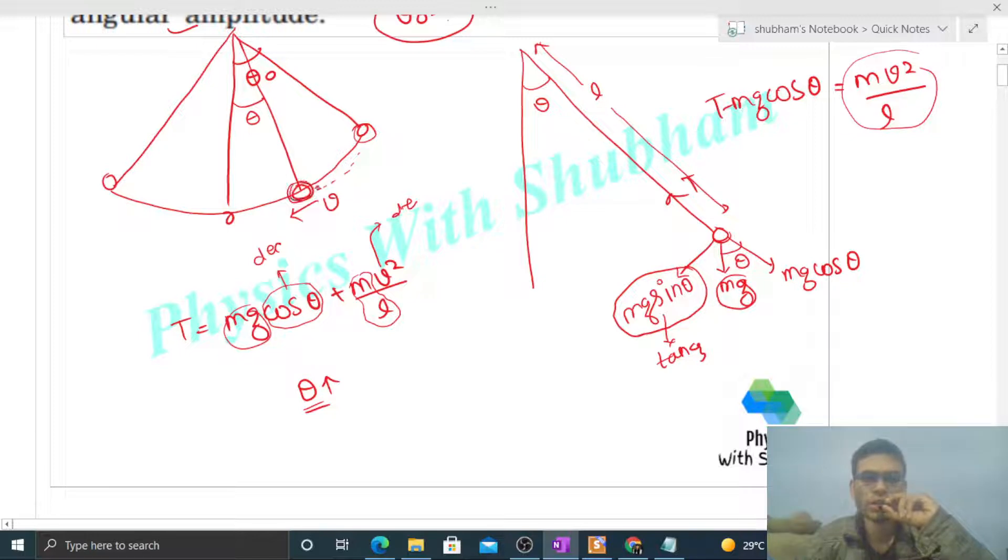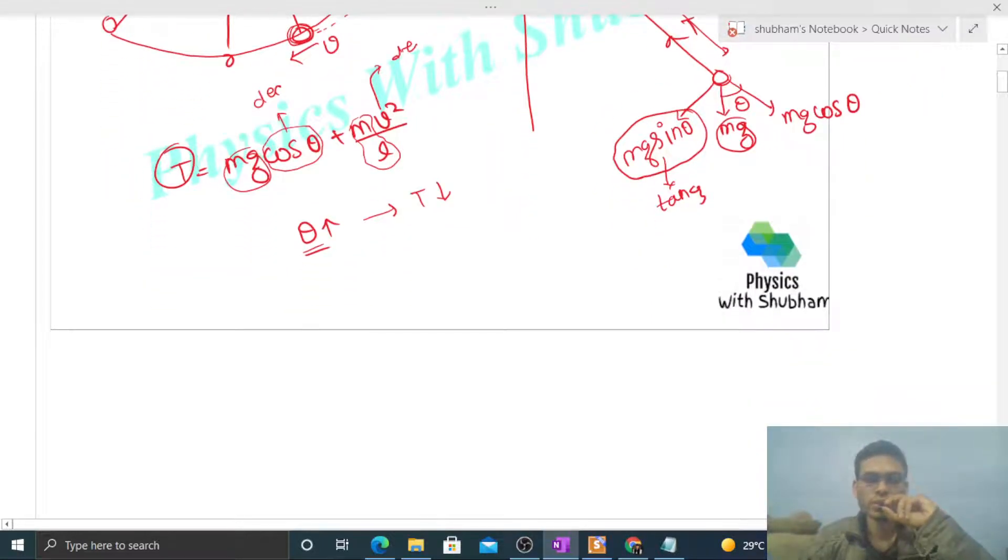Because if theta increases, this pendulum will be moving towards its extreme position. As theta increases, the pendulum goes nearer to its extreme position, and at the extreme position in SHM, the speed decreases. So we can say if theta increases, then tension decreases, because cos theta also decreases and speed also decreases.